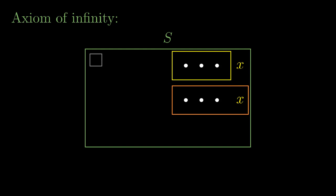This means that once S contains the empty set it must also contain the set formed by adding the empty set as an element to itself. Such a set is also called the number 1, and the empty set is also called 0.